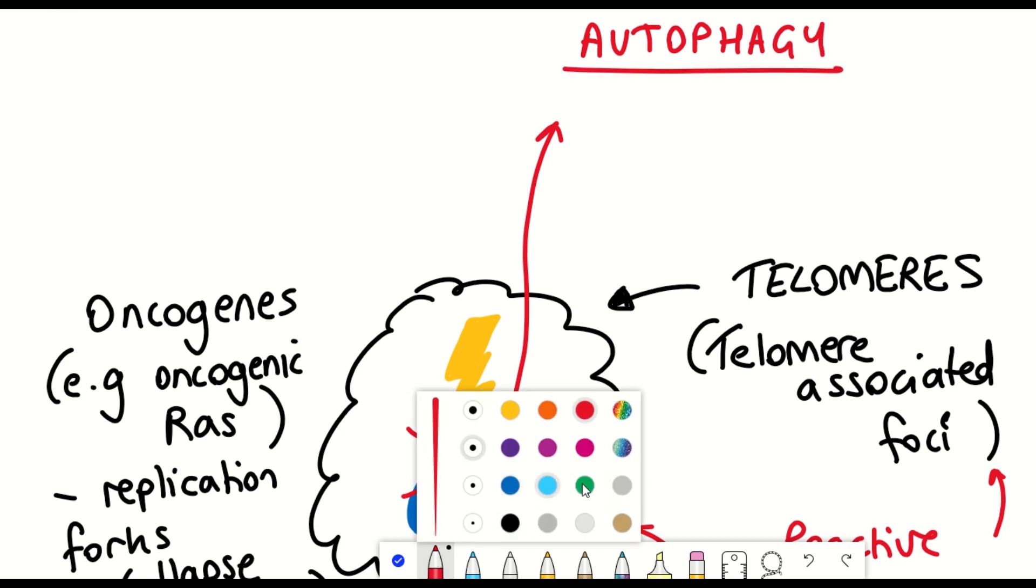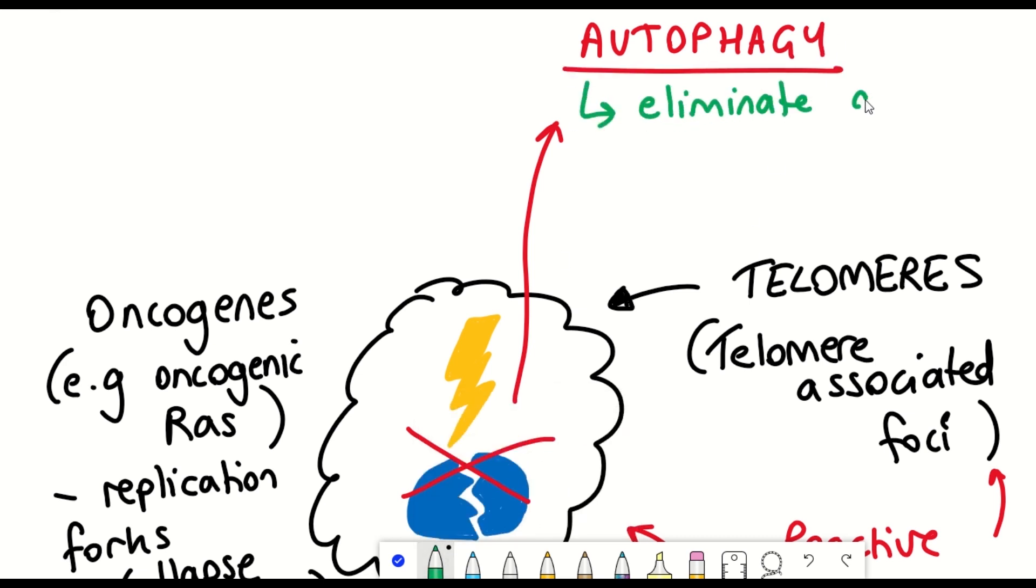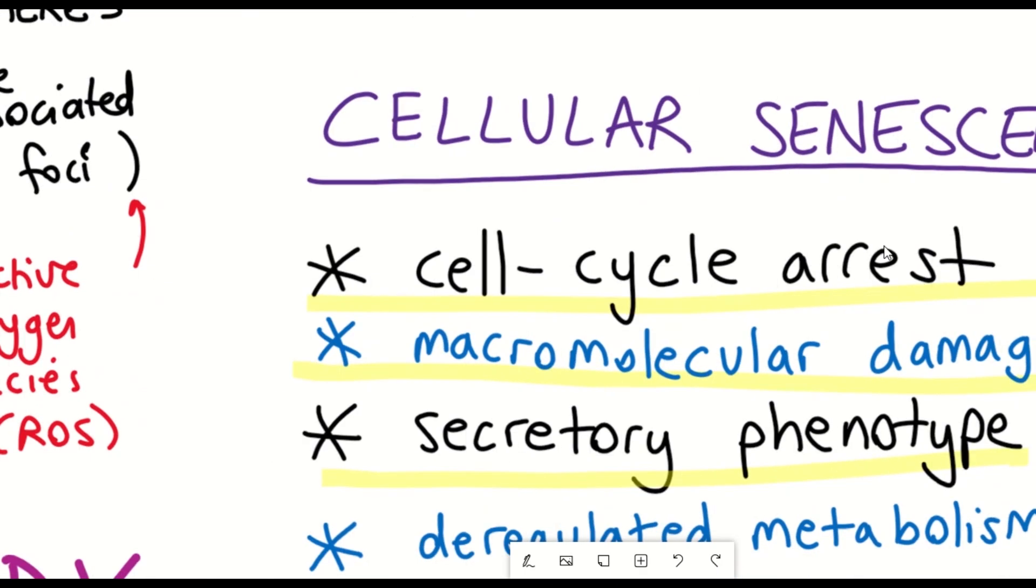Processes that can therefore remove these damaged proteins is therefore advantageous to a senescent cell. And so upregulated in senescent cells is a process known as autophagy, which helps to eliminate damaged and unfolded proteins.